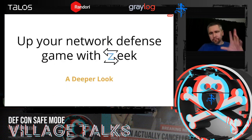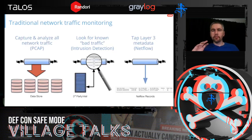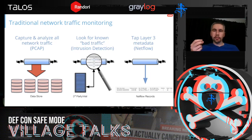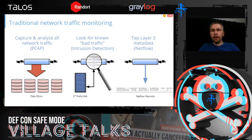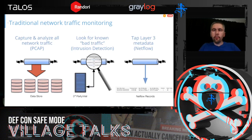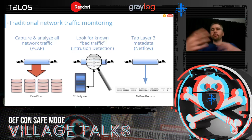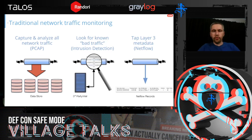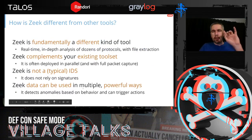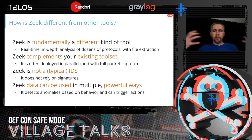Let me compare Zeek to some familiar tools. On one side you have packet capture tools like Wireshark and tcpdump. In the middle, intrusion detection and prevention systems like Snort and Suricata — signature-based detection. On the far right, NetFlow — just IP addresses, ports, protocols, timestamps, that kind of high-level information. These are three very common tools you're probably already familiar with. Zeek is fundamentally different from all of them.